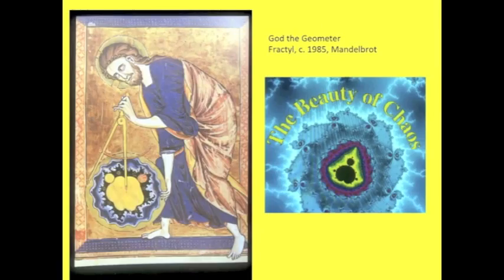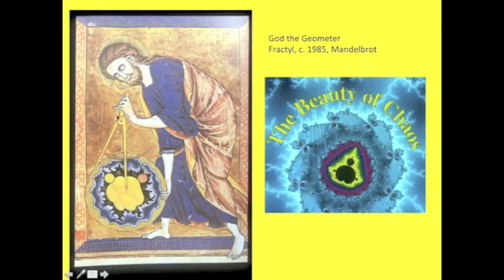Geometry is not neutral. Already back in the time of Plato and before Plato in the time of Pythagoras, geometry was thought to connect to cosmological meanings in a way that was readable and decipherable. This is a medieval image of God — God the geometer — where God's method of creating the world is to use geometry. This swirling, chaotic, unformed substance is, through geometry, made orderly and divine.